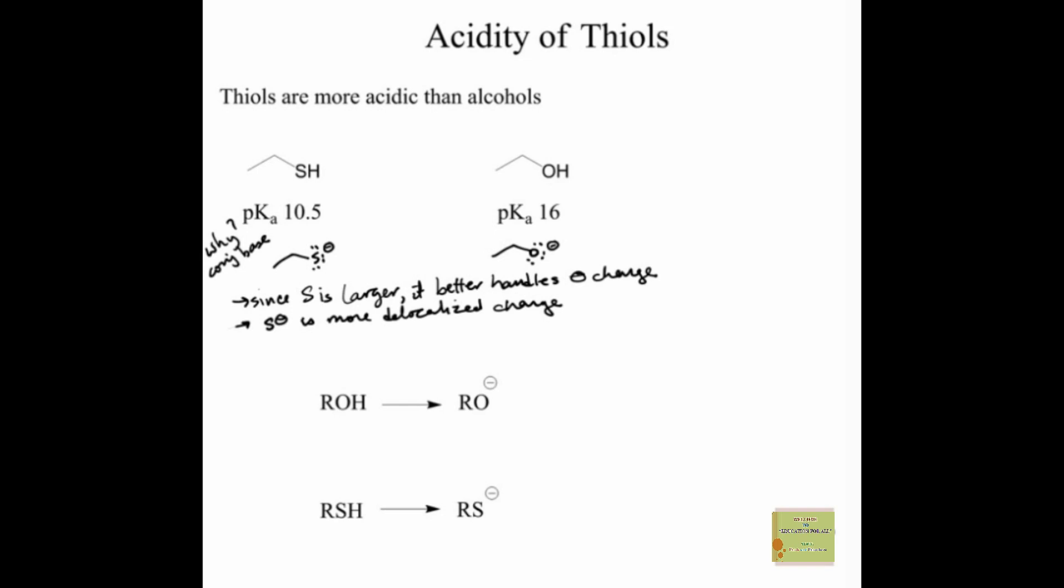What does that do for us? If the negative charge on sulfur is more stable, that means that this S minus is more stable. More stable means that it is less reactive and therefore the weaker conjugate base. This is a much weaker conjugate base and because it's a weaker conjugate base, it has the stronger parent acid, which was the thiol with the lower pKa of about 10.5. So in comparing alcohols to thiols, it's important to know that thiols are more acidic.